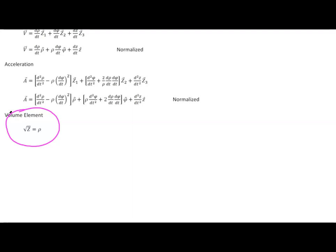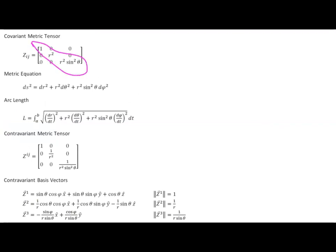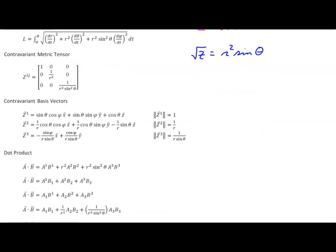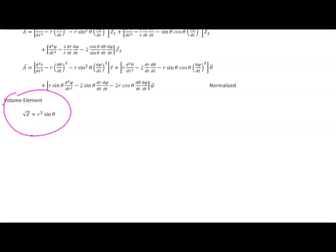Finally, we'll finish up with spherical polar coordinates. Here it's the same drill — only diagonal elements — so we multiply those together. The determinant value of our covariant metric tensor is equal to the product of the three factors, which is r to the fourth power times sine squared theta. And of course our volume element, just the square root of that, is r squared sine theta. The volume element for spherical polar coordinates is r² sinθ.